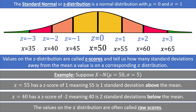It might be the case that you have a raw score that does not nicely correspond to one of the whole number Z scores. For example, if I had an X value or raw score of 57, that would fit somewhere between a Z score of 1 and 2. It would be nice to have a formula that converts between the raw score and the Z score, which is exactly what we're going to talk about next.